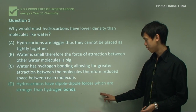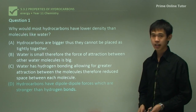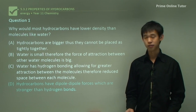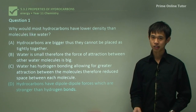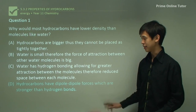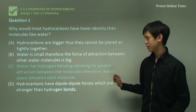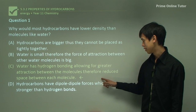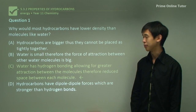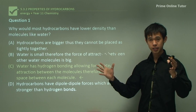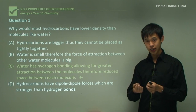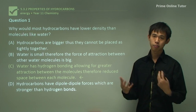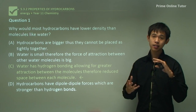Option C — hydrocarbons have dipole-dipole forces which are stronger than hydrogen bonds — is incorrect because hydrocarbons generally don't have dipole-dipole forces; they have dispersion forces, which are not stronger than hydrogen bonds. The correct answer is D: water has hydrogen bonding, allowing for greater attraction between the molecules and therefore reduced space between each molecule. Because you have bigger forces from the hydrogen bonds, the molecules can be packed closer together, and you get higher density because there's more mass per unit volume.